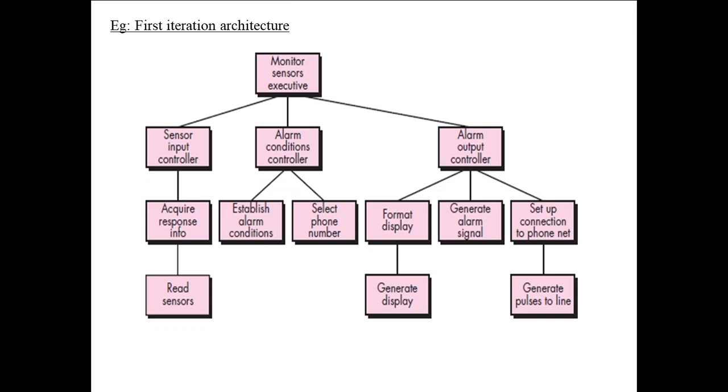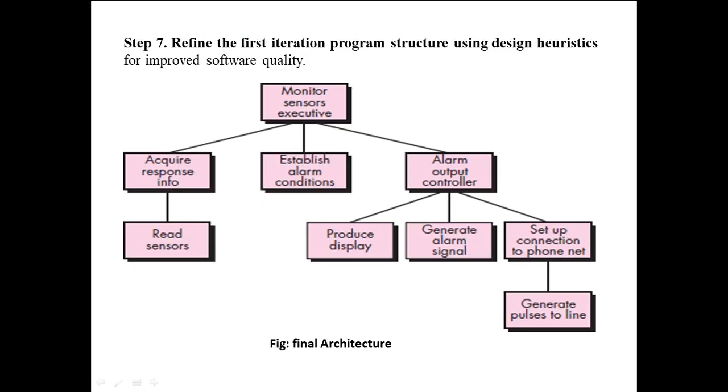We need to draw the perfect diagram from this. Step 7 is refine the first iteration program structure using design heuristics for improving software quality. In order to improve the quality, we are improving the architecture. This is your final architecture.